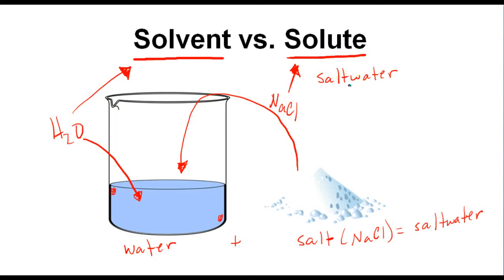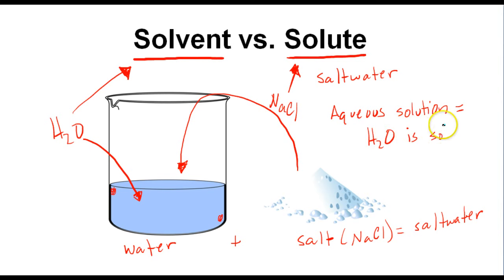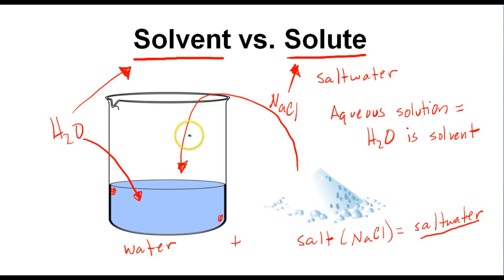In this unit, we are going to be dealing with solutions in which water is the solvent. What do we call a solution in which water is the solvent? Whenever we have a solution in which water is the solvent, we have what is known as an aqueous solution. Whenever we have an aqueous solution, H2O is always the solvent. So this solution here would be an aqueous solution of salt water, and in this unit we will be dealing with aqueous solutions — solutions in which the solvent is always going to be water.